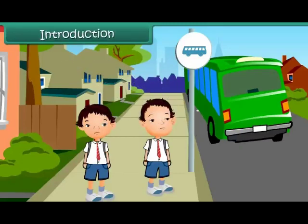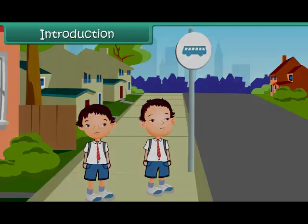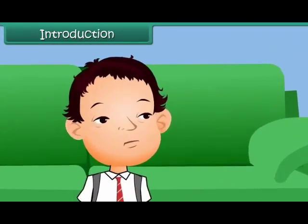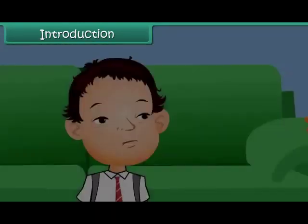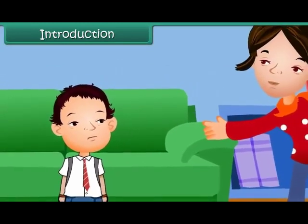Kush has missed his school bus again. His mother is very angry with him. Kush knows the cause of this problem — he cannot read time from a clock. As a result, he gets delayed. But he has made up his mind today: he will learn to read time and never miss his school bus.